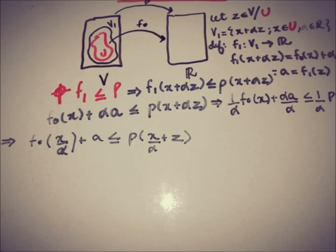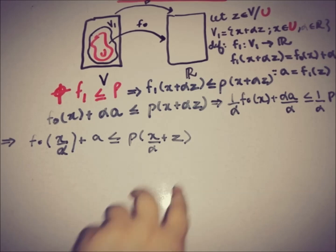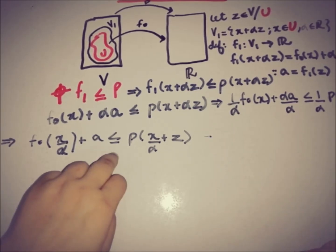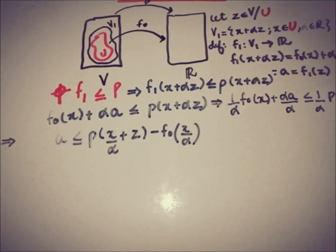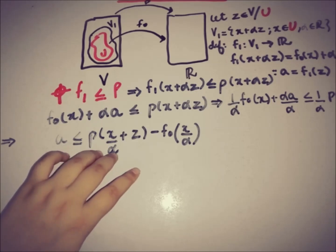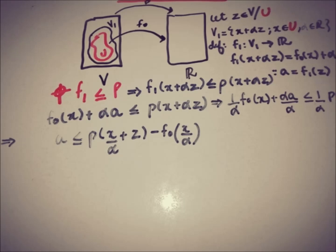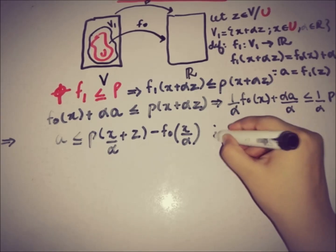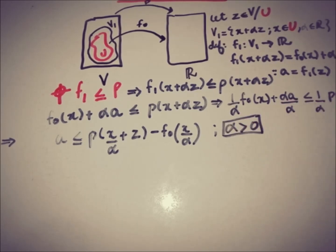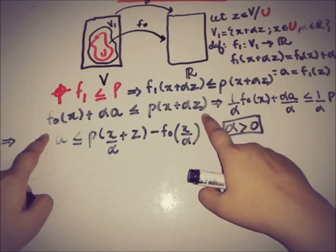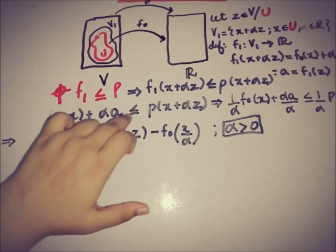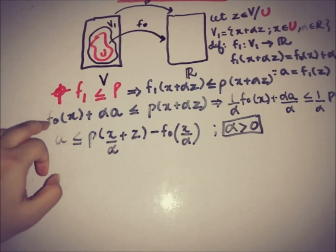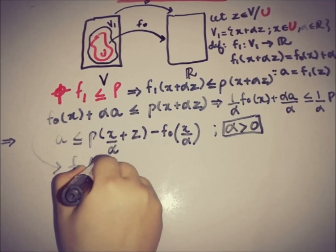Rearranging the inequality for α > 0, we move terms to isolate a: a ≤ p(x/α + z) − f₀(x/α). This gives the upper bound on a when α is positive. Now for the case α < 0, the inequality sign flips when we divide by α, so we get f₀(x/α) + a ≥ p(x/α + z) divided by the negative quantity.